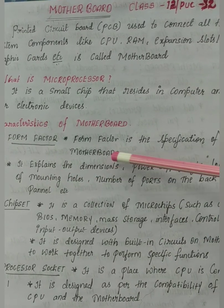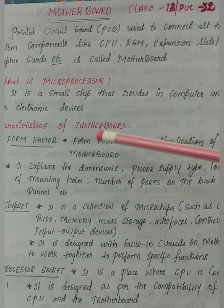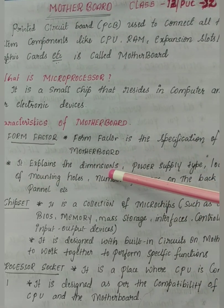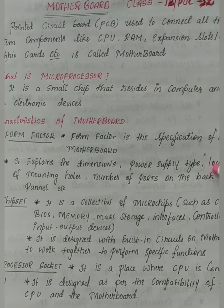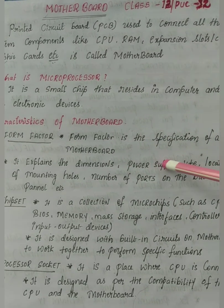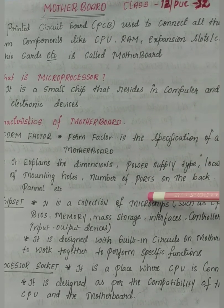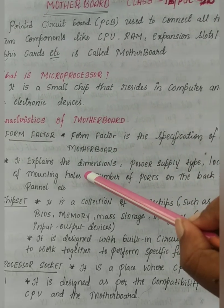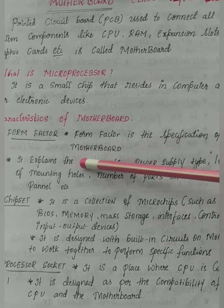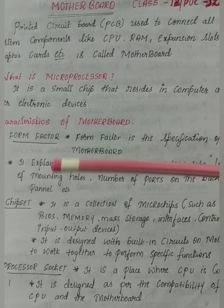Form factor explains the dimensions and power supply. There are two types of power supply: online UPS and offline UPS. These are concepts we will study in upcoming sessions. For now, you need to know what elements or concepts are present in the form factor. The motherboard also consists of some holes, ports, and slots so that we can connect various components to it.